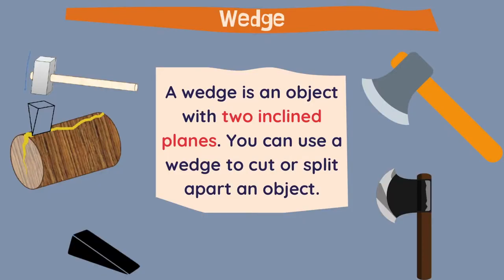Let's move on now to the wedge. A wedge is an object with two inclined planes. If we put these two together we have the wedge, and you can use a wedge to cut or split apart an object. This example here — we put the wedge on a piece of wood, on a trunk, and we hit it with the hammer to split the wood in two parts. We can also use a wedge on axles or even to create a door stopper.